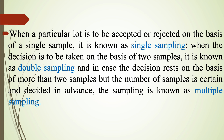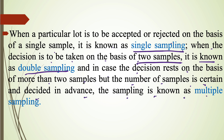Coming to the types of sequential sampling: when a particular lot is to be accepted or rejected on the basis of a single sample, it is known as single sampling. When the decision is to be taken on the basis of two samples, it is known as double sampling. And when the decision rests on the basis of more than two samples, but the number of samples is certain and decided in advance, the sampling is known as multiple sampling.